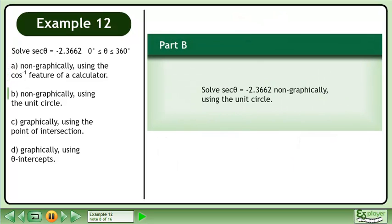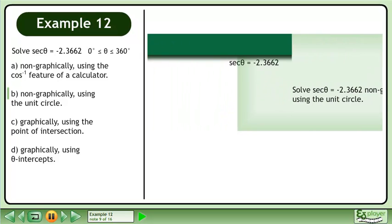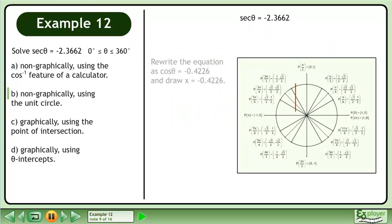In part B, solve secant theta equals negative 2.3662 non-graphically using the unit circle. We write the equation as cos theta equals negative 0.4226 and draw x equals negative 0.4226.